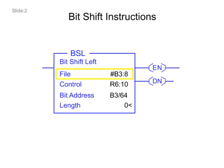The File field contains the address of the register that will be manipulated. The Control field stores the status of the instruction. The Bit Address contains the source location for the bit being shifted into the register. Length is the number of bits. The actual length is determined by the application.